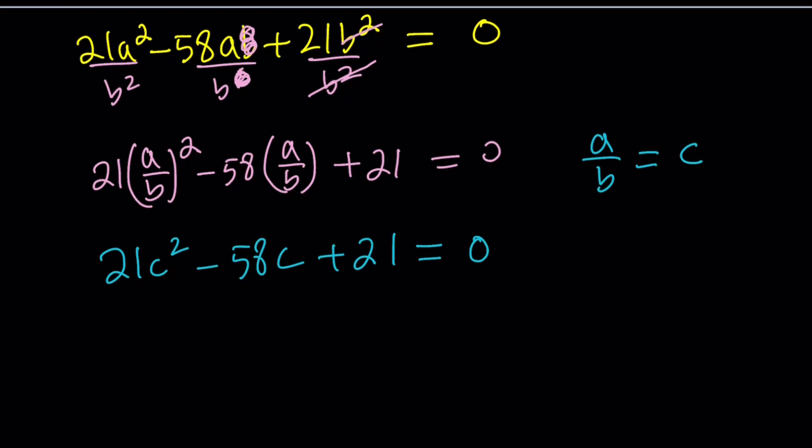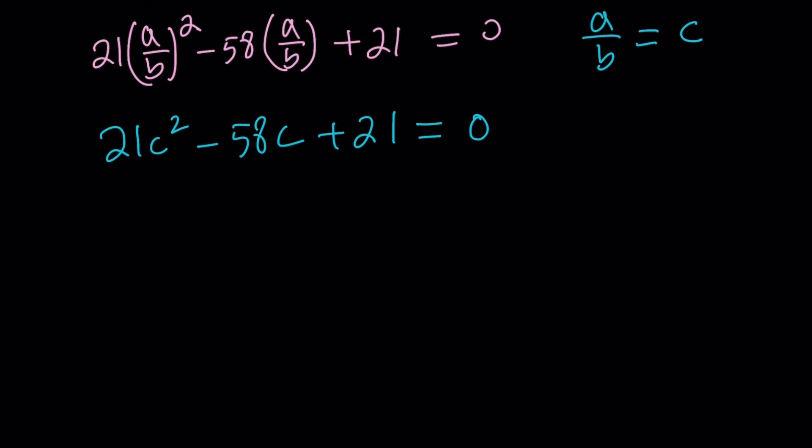Let's see how we can factor this expression by using the quadratic formula or something like that. You can also use a calculator at this point because the numbers are pretty large. You could also use the x method. You multiply 21 times 21, that gives you 441. You put the product here, the sum here, that's -58.